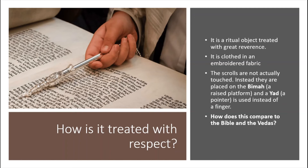The Torah is treated with respect when in use. It is a ritual object clothed in embroidered fabric called the mantle. The scrolls are not touched — instead they are placed on the bema, a raised platform, and a yad — a pointer — is used instead of a finger. You would never see somebody touching the scrolls with a finger; they would always use a pointer.